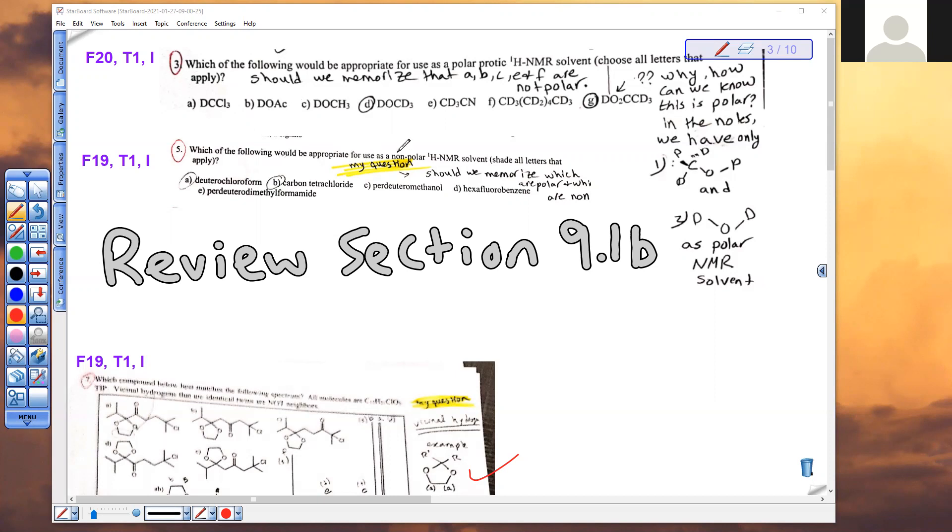So down here, we want to use nonpolar solvents. In the notes on section 9.1d, hexane was given. Carbon tetrachloride, I don't think was given, but you know carbon tetrachloride is nonpolar. Even though it has some polarity in each bond, the polarity cancels in a tetrahedron. No H's to worry about there. Deuterochloroform is a nonpolar solvent.